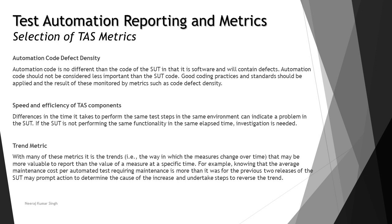Finally, we have the trend matrix, which monitors how progress is going so far. We need one metric that continuously monitors the progress and trends of the tool. With many of these metrics, it is the trend that may be more valuable to report than the value of a measure at a specific time. For example, knowing that the average maintenance cost per automated test requiring maintenance is higher than it was in the previous two releases.